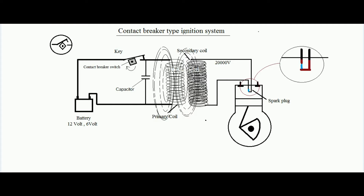If no capacitor is used, the primary circuit has only the battery, switch, and primary coil in series. When key K is pressed, the current shoots up from zero to maximum. This rapid shooting of current from zero to maximum can develop a spark between the two contacts of the switch.